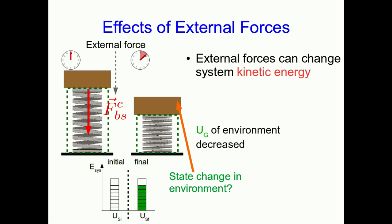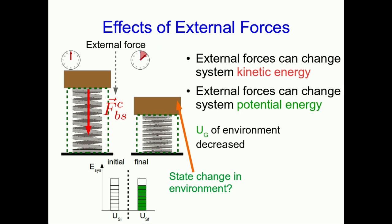I didn't include the gravitational potential energy in my energy bar chart because it's not in my system. So here we see that an external force — the force that the brick exerts on the spring — appears to have caused a change in the system's potential energy.